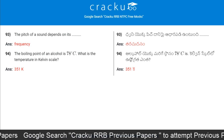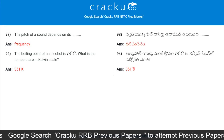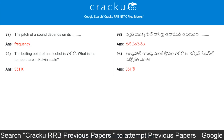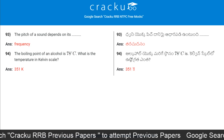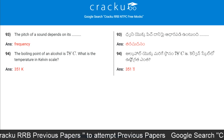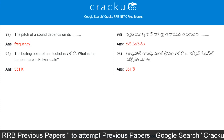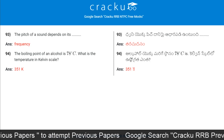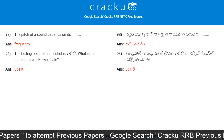The boiling point of alcohol is 78 degrees centigrade. What is the temperature in the Kelvin scale? 351 Kelvins.